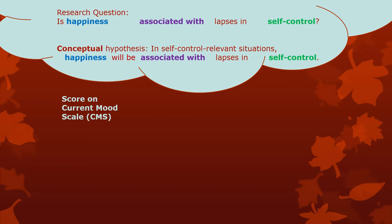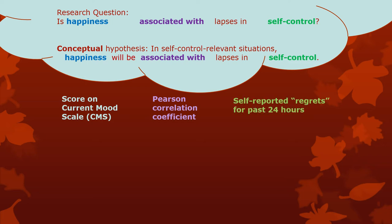So let's decide on one operationalization. Let's say there's a scale called a current mood scale, and that's how we define happiness in this study. So happiness is your score on the current mood scale, which is a self-administered, self-report Likert scale item questionnaire. Association is the Pearson correlation coefficient — if there's a significant positive or negative number there, the hypothesis is supported. And for self-control, let's ask people how many self-reported regrets they have in the past 24 hours for things where they didn't show enough self-control. Is there a Pearson correlation coefficient that's not zero between people's current mood scale score and the number of self-control regrets in the past 24 hours?